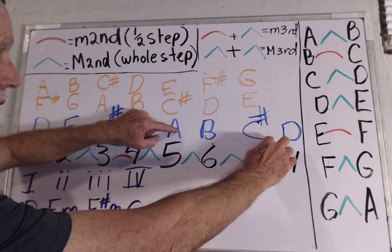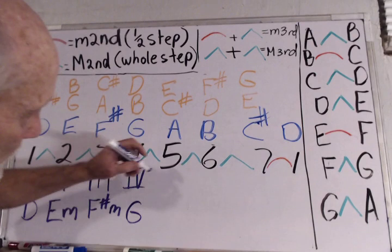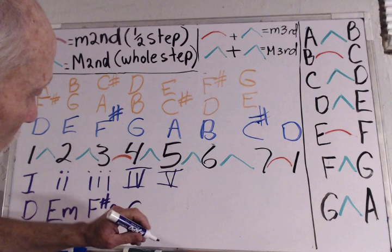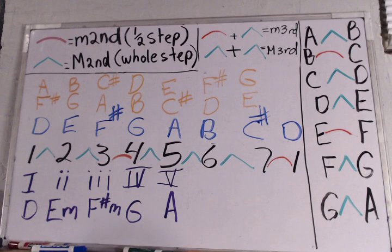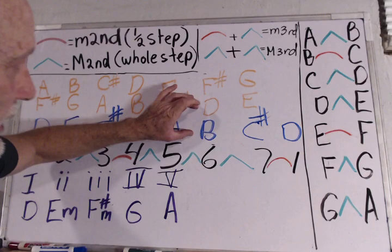Moving to the five chord. A to C sharp, two whole steps, that's a major third. C sharp to E, that's a step and a half, minor third. That's another major chord. So five chord, and the chord is going to be called A. It's an A major chord.